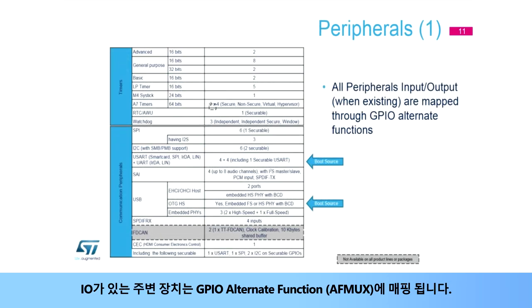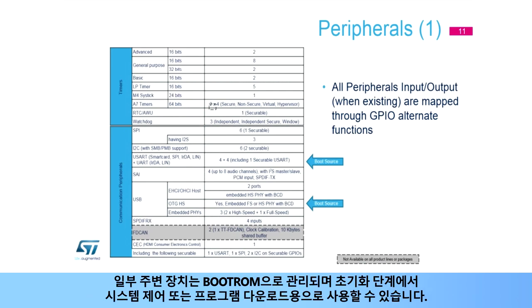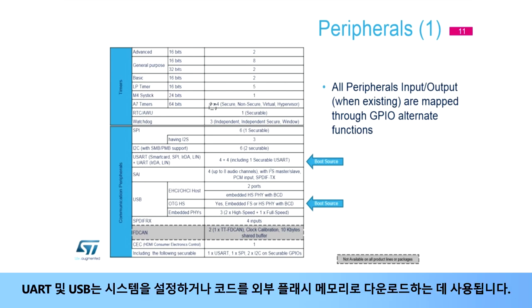Peripherals with IOs are mapped on GPIO alternate functions. Some peripherals are managed by boot ROM and can be used as system control or program download during the initialization phase. UART and USB are used to set up the system and/or download code into external flash memory.